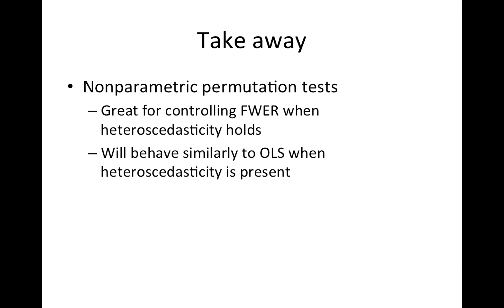The takeaway from this: I'm definitely not anti-permutation tests — they're great — but you need to make sure the exchangeability assumption holds. In the case of heteroscedasticity it may not hold, and this bivariate outlier is an example. When it doesn't hold, you basically get what you would get if you just used OLS, so it's not giving you much on top of ordinary least squares with a standard t-statistic. The simulations I ran were not corrected for multiple comparisons — it was a one-voxel thing — so this isn't really about controlling multiple comparisons; that's separate.